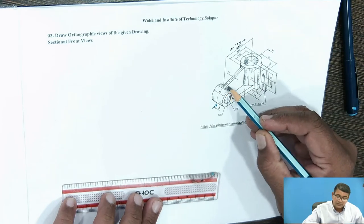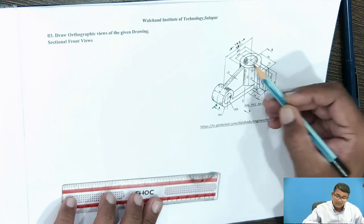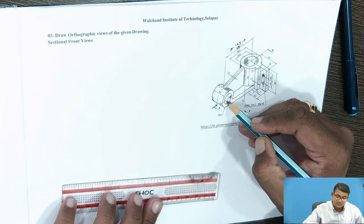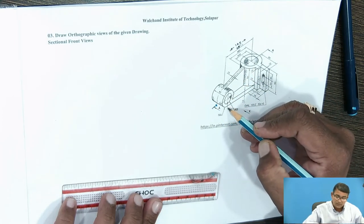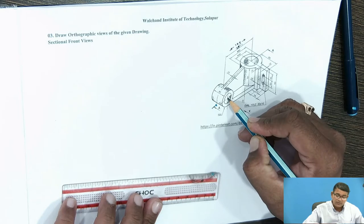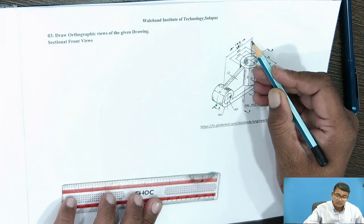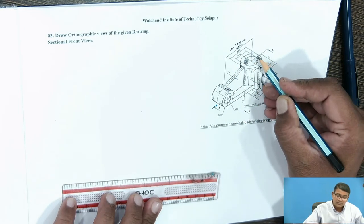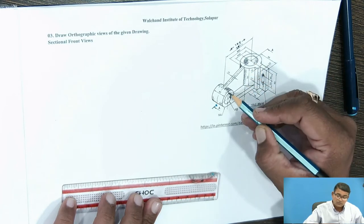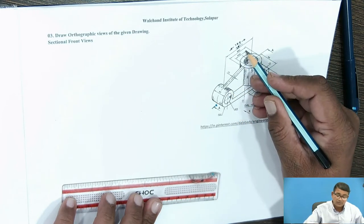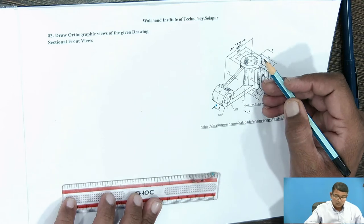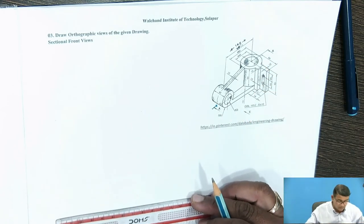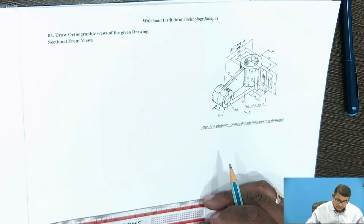It is given that from this center line to this center line is 105. Plus this radius and plus this radius — 105 plus this radius. Radius is given as R20. So 20 plus 105 is 125. Then 125 plus R30 gives 155. So make a block of 155.